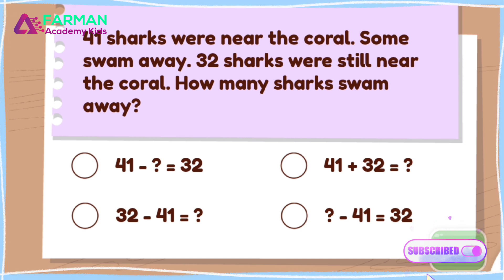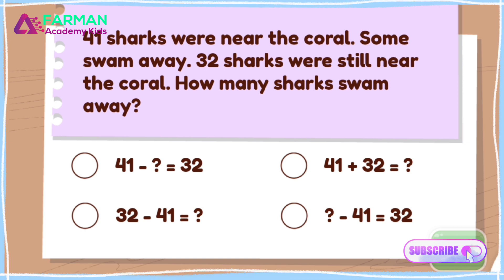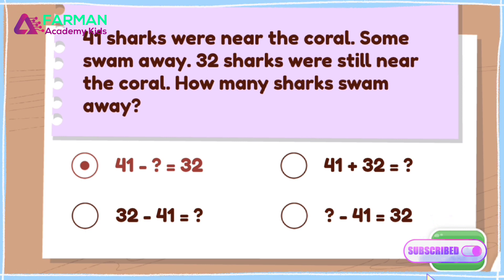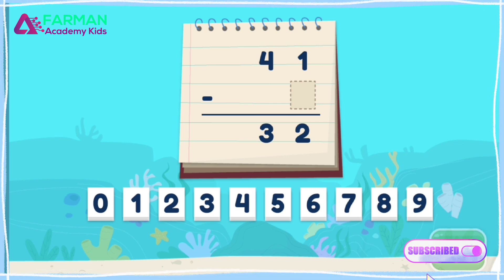Which equation matches the word problem? We want to figure out how many sharks swam away. Which equation matches the word problem? Which equation shows that? You got it! 41 minus what equals 32? That reflects the word problem. How many sharks swam away? Drag the numbers to the dotted rectangles to solve the equation.